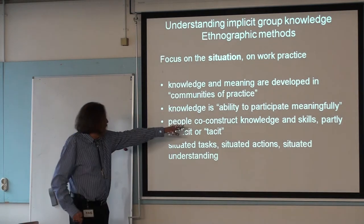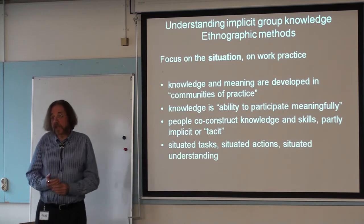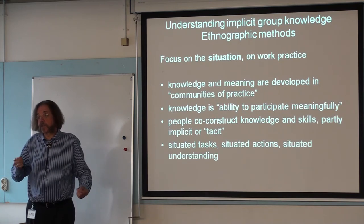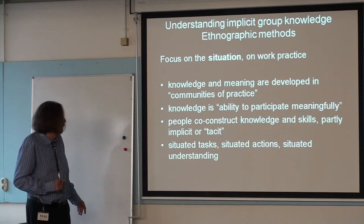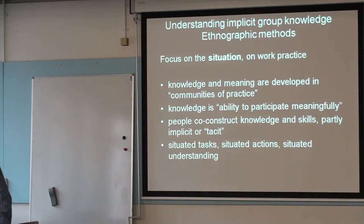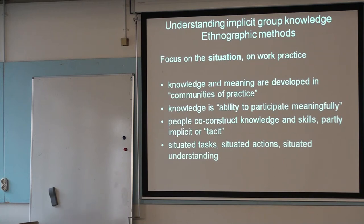Consequently, ethnographers will always tell you that knowledge is developed by people together — it's co-constructed. You can't say 'I know this'; you say 'we know this,' because there's no such thing as 'I know how to behave' — only 'we know how to behave together.' Part of this knowledge is completely tacit. People are not able to speak about it, but they are able to perform together. It's like a string quartet — as long as I don't tell them my observations, they happily work together. But once you make the knowledge explicit — like 'pay attention to his breathing and copy it' — things go wrong.